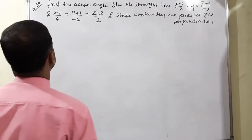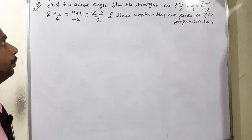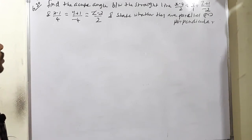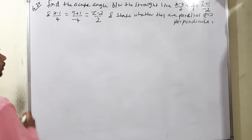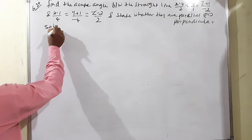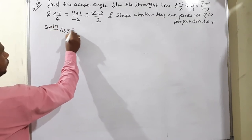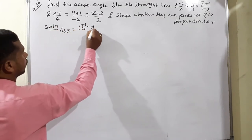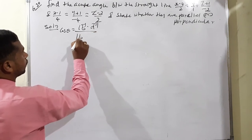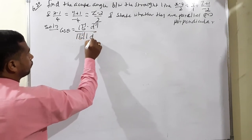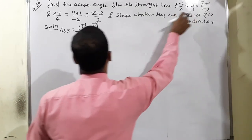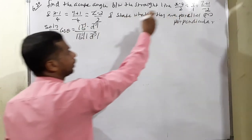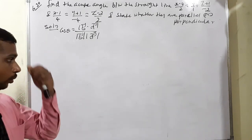Question 6.30: find the acute angle between the straight lines and state whether they are parallel or perpendicular. We need to find b vector and d vector using the formula cos theta equals modulus of b·d divided by modulus b times modulus d. The denominator gives b vector and d vector; the numerator gives points.